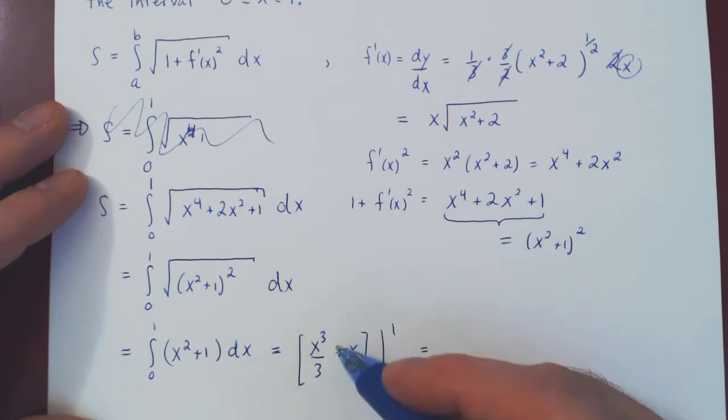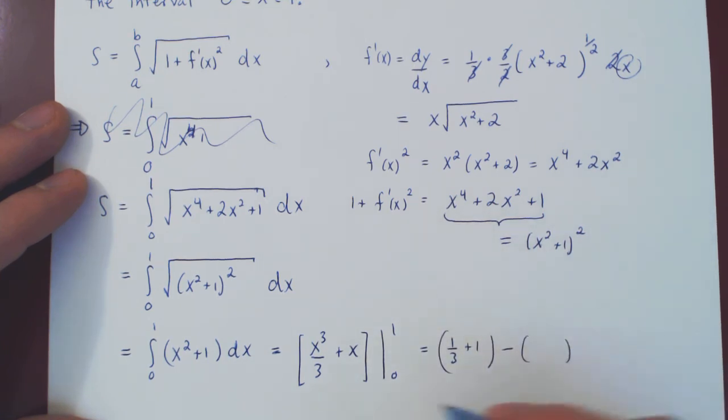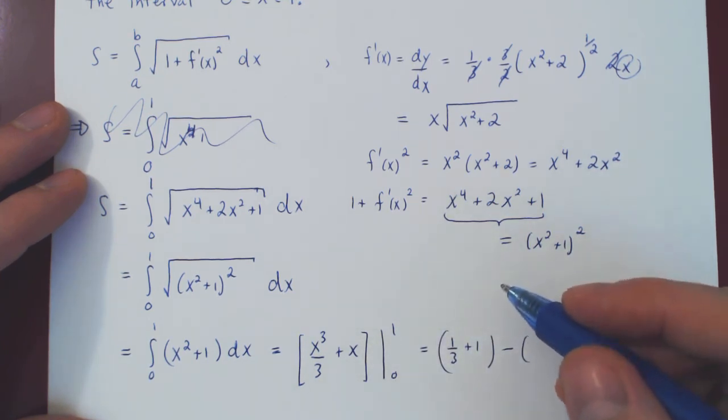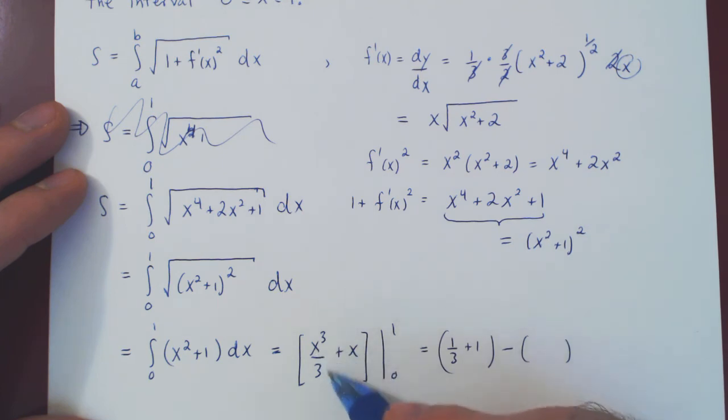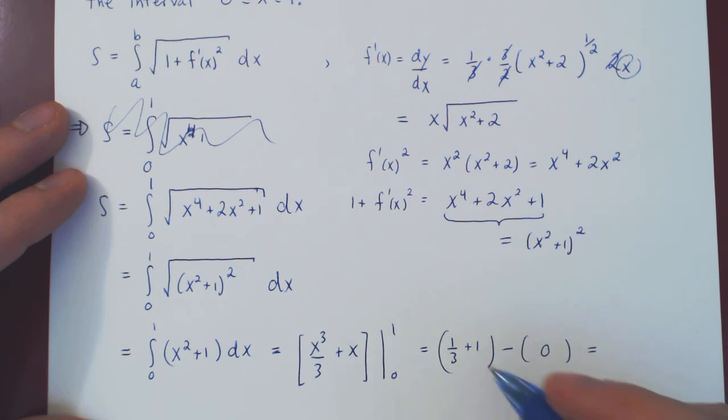And we must evaluate from 0 to 1. So if you're right at 1 here, we get 1 third plus 1 minus the function at the lower bound of integration. But replacing x by 0, of course, gives us 0. So all we're left is 1 third plus 1, which is 4 thirds. And that's it.